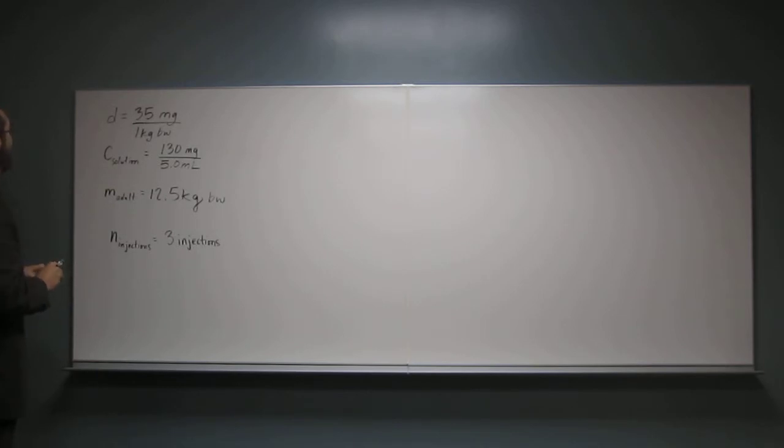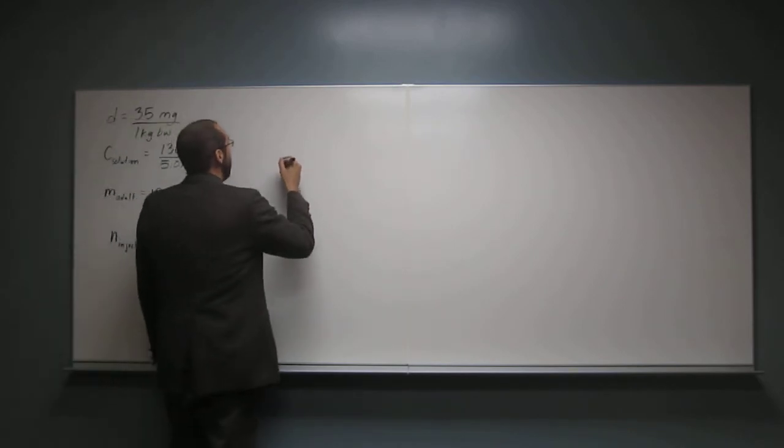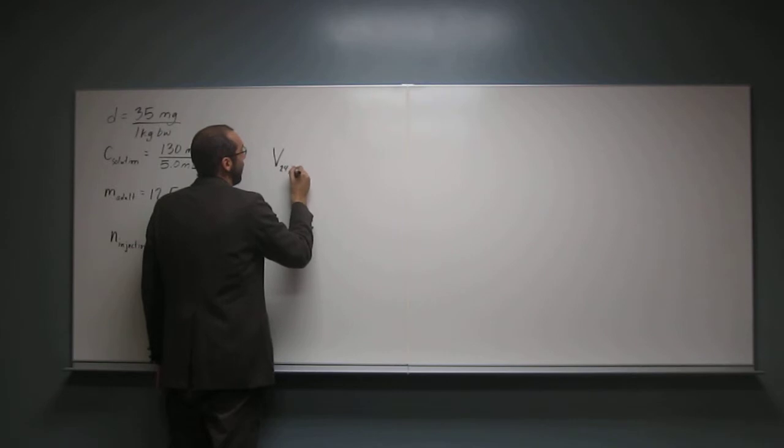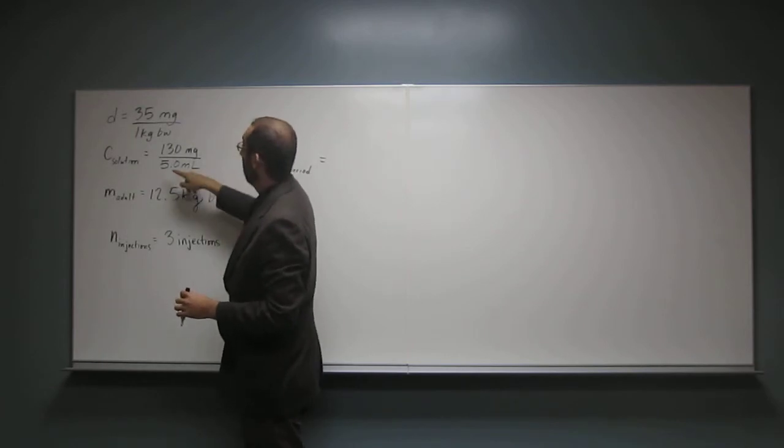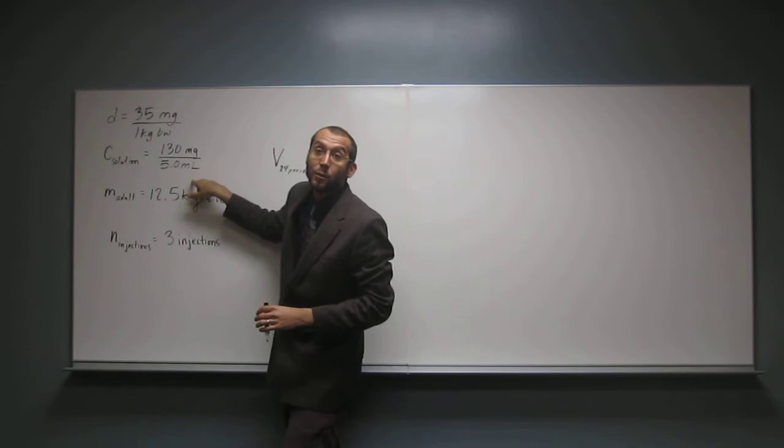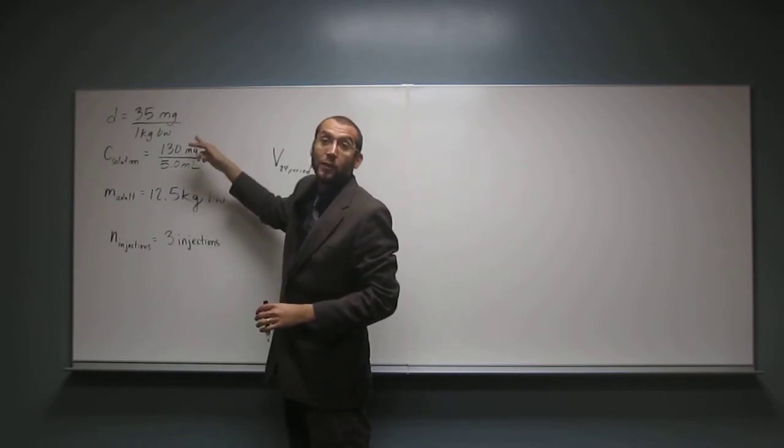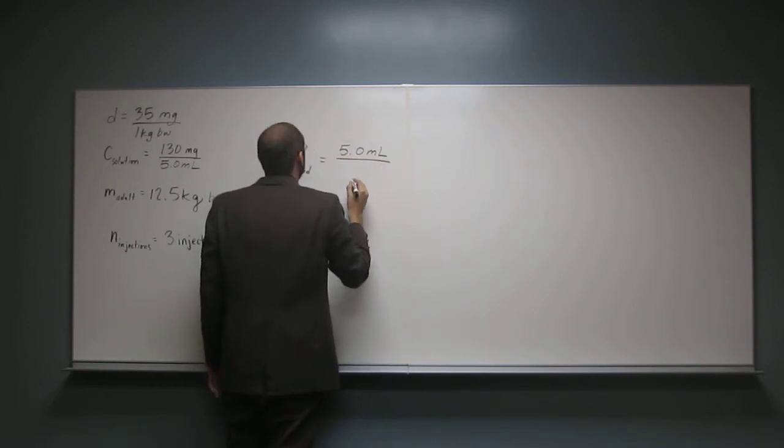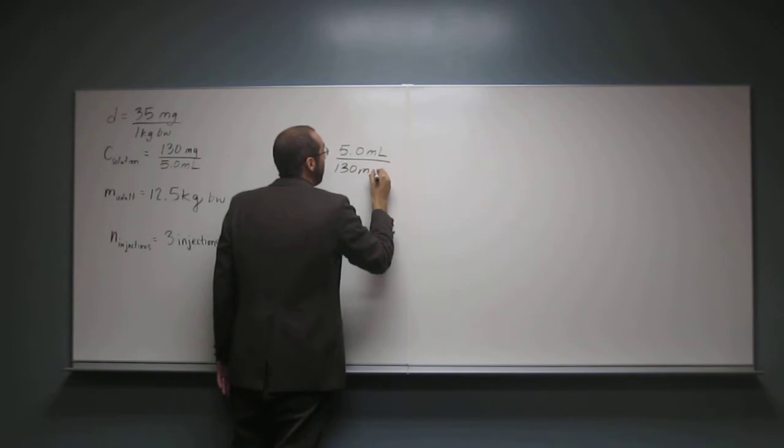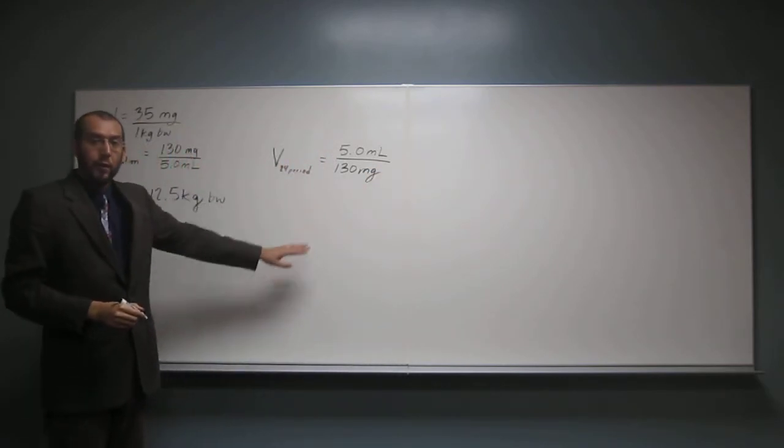Let's go about figuring out how many milliliters in all three injections. Remember, there's three injections for a 24-hour period. So let's do all three injections. Let's not worry about this number yet. The volume in a 24-hour period is going to be, well, we want volume units. So the only volume units that we have in here is 5.0 milliliters. That has to be on the top. If that's on the top, then we're going to have to flip this thing over. So it's going to be 5.0 mils divided by 130 milligrams of the drug. Does that make sense, what we've done so far?